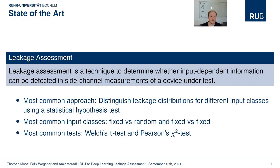This work proposes a new strategy for black box leakage assessment. In simple words, leakage assessment is a technique to determine whether input-dependent information can be detected in side-channel measurements of a device under test. Typically, if I can learn information about the processed inputs from a side-channel trace, then indeed some kind of side-channel leakage is present. This does not necessarily mean that the device is vulnerable to attacks, but it is usually desirable that no detectable input-dependent information is leaked to potential adversaries.